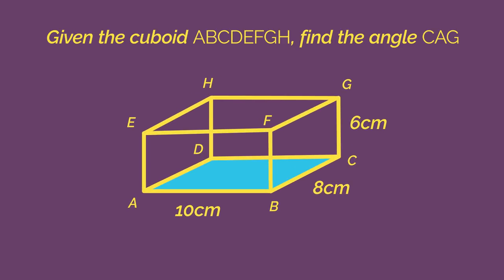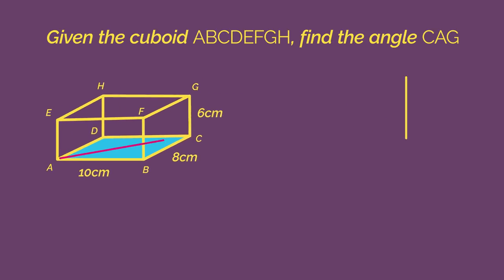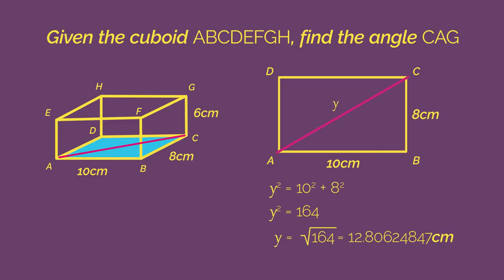To find the length of AC, we need to go back to our first diagram and draw on the line AC. We can easily find the length of AC using Pythagoras on this triangle.